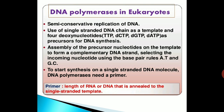DNA polymerases in eukaryotes carry out semi-conservative replication of DNA, using a single-stranded DNA chain as a template and four deoxynucleotides — dTTP, dCTP, dGTP, and dATP — as precursors for DNA synthesis. They assemble precursor nucleotides on the template to form a complementary DNA strand, selecting the incoming nucleotide using base-pair rules A-T and G-C. To start synthesis on a single-stranded DNA molecule, DNA polymerases need a primer — a length of RNA or DNA that is annealed to the single-stranded template.